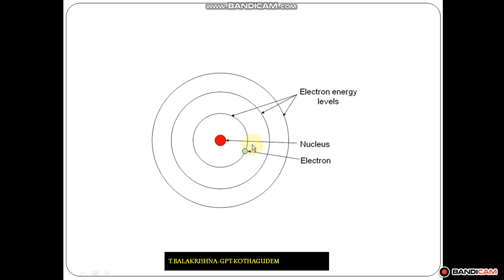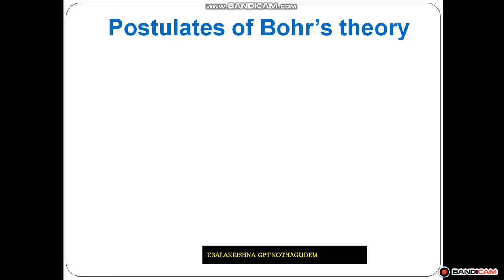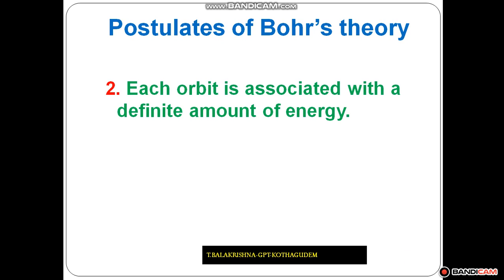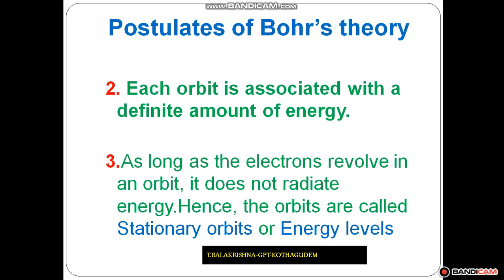Every orbit is associated with a definite amount of energy, so that orbit is called an energy level. As long as an electron revolves in an orbit, it does not radiate energy, so the energy of the orbit is stable. Therefore, that orbit is called a stationary orbit or energy level.